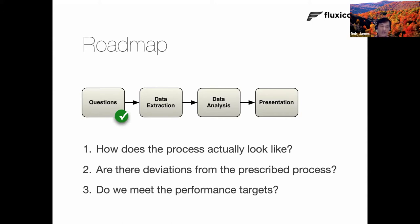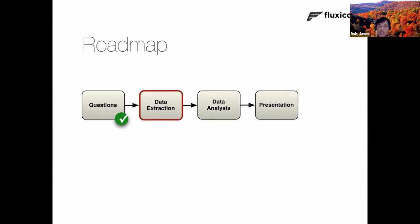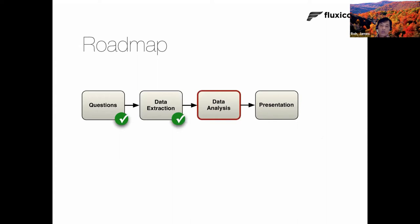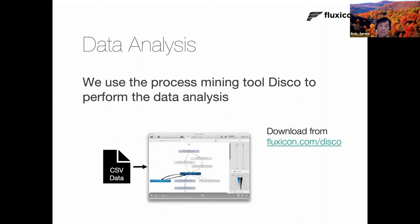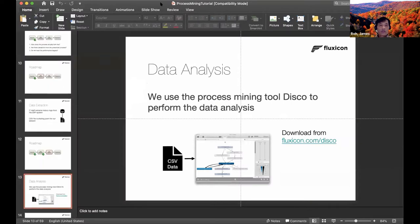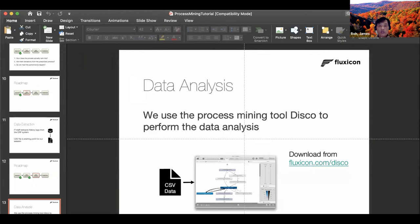The first question is: how does the process actually look — what does the process map look like in detail? Second: are there deviations from the prescribed process? Third: do we meet the performance targets? For data extraction, you contact your ERP or database manager. Note that data can be very sensitive, so you may have to go through layers of approval. Then we move into data analysis using Disco.